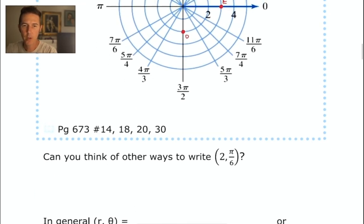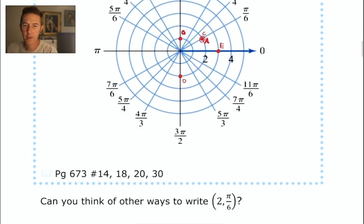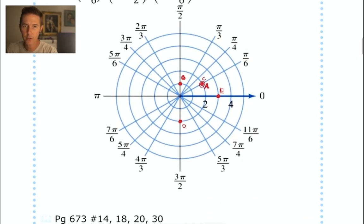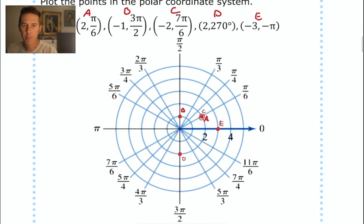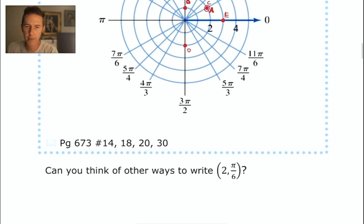Can we think of other ways to write the point 2, pi over 6? Absolutely. We actually already saw one. 2, pi over 6 was point A, and negative 2, 7 pi over 6 was the same point. So let's write that one down.